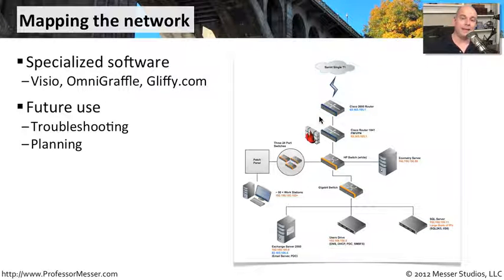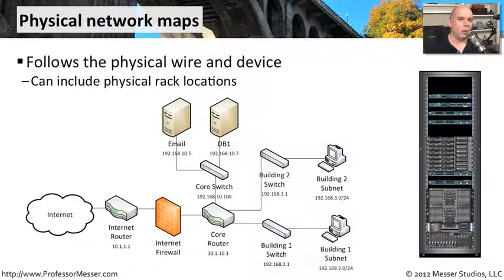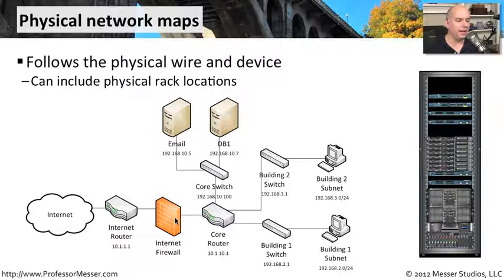Once you have the map in place, you can start troubleshooting and use it for future planning. You can put it up on the wall and determine how you might want to upgrade certain parts of the network. Seeing something in a visual form is very often much better and easier than seeing things written in a text-based form. A very common way to map the network is to physically map out what devices you have and draw the wire connecting those devices together. This physical map gives you a perspective of exactly the way the network is linked — you know what device is connected to what device.